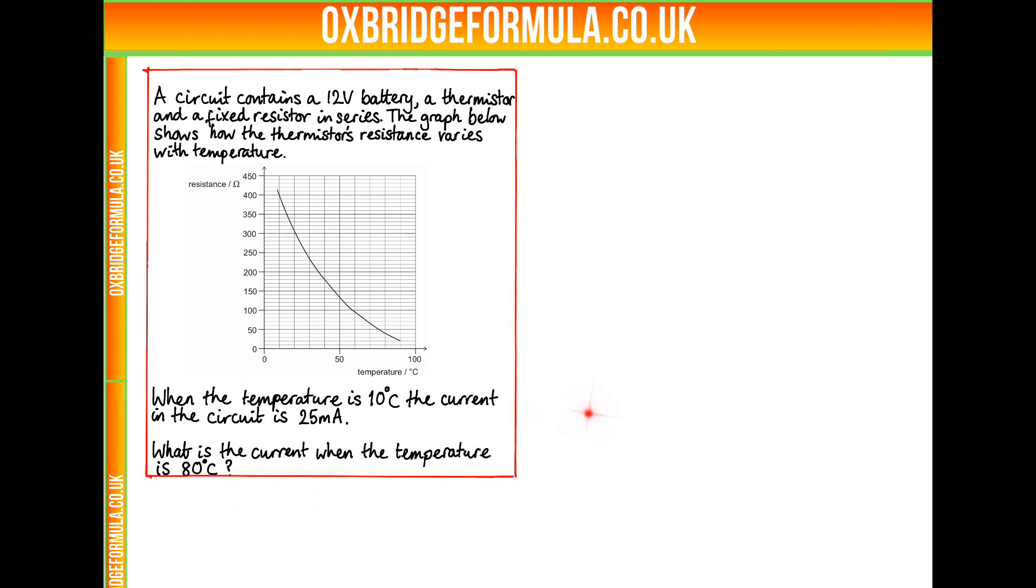So immediately we should think to put the resistance of the thermistor on here. At 10 degrees, we get 400 ohms of resistance.